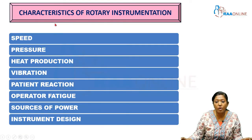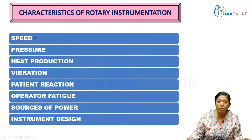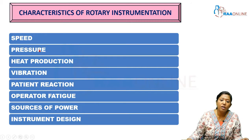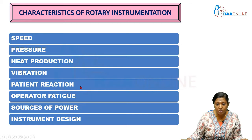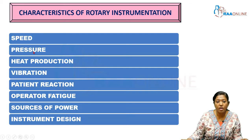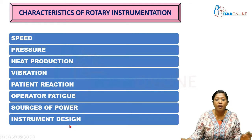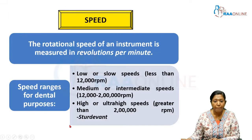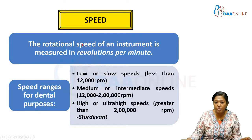Now we will see a very important essay or short note question on the characteristics of the rotary handpiece. These characteristics are: speed, pressure, heat production, vibration, patient reaction, operator fatigue, sources of power, and instrument design. We will see in detail how each of these influences the speed of rotation. Speed is defined as revolutions per minute, or RPM — how many times the bur rotates in your handpiece in one minute.